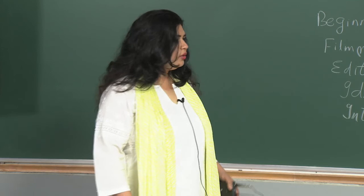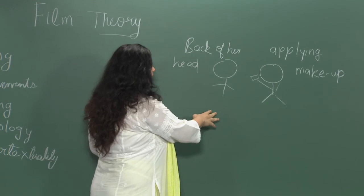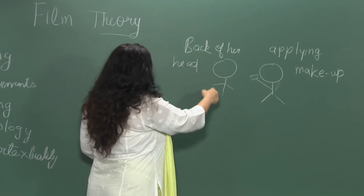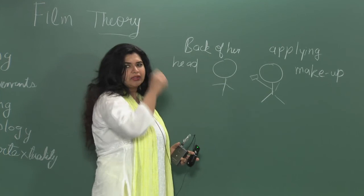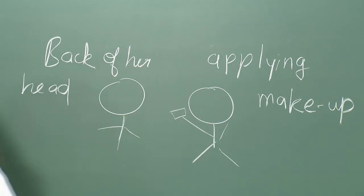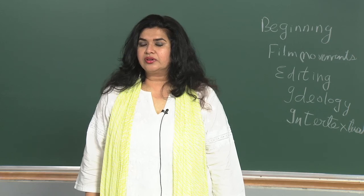Here I have drawn a very crude picture illustrating an example from Breathless. Imagine the protagonist and his lady love driving in a car — we see the back of Jean Seberg's head — then suddenly we find her applying makeup. This is a quick example of a jump cut. If you Google 'jump cut' you will find several videos which will show you exactly what it means.